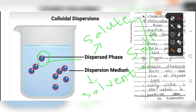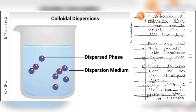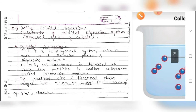A solution means a mixture of solute and solvent. The terms dispersed phase and dispersion medium combine together and are known as a dispersed system, also called a colloidal system. The simple definition: it is a heterogeneous system made of dispersed phase plus dispersion medium.